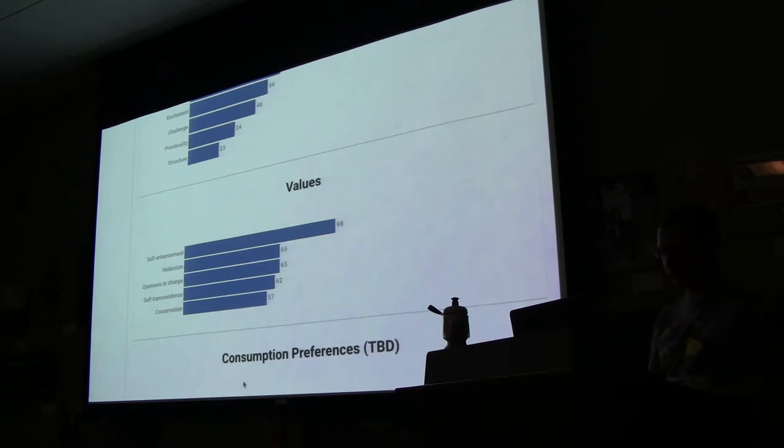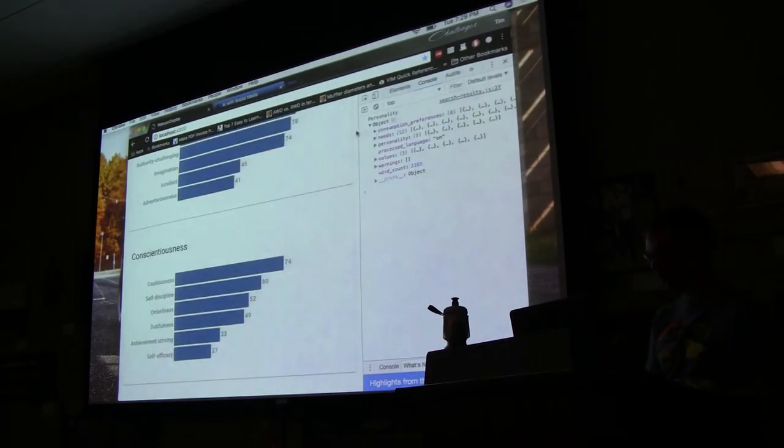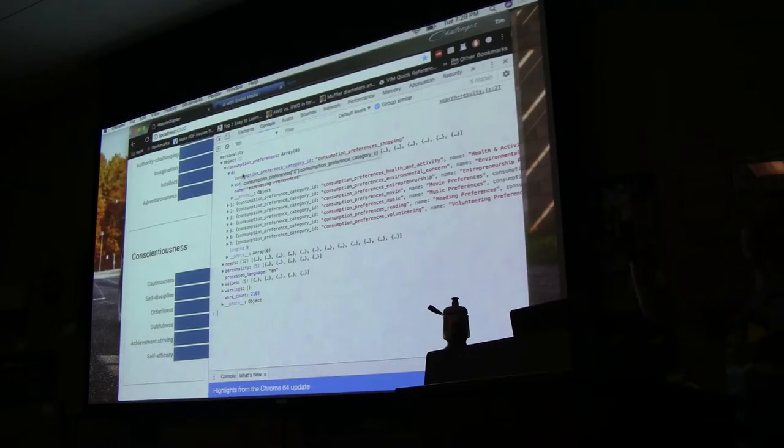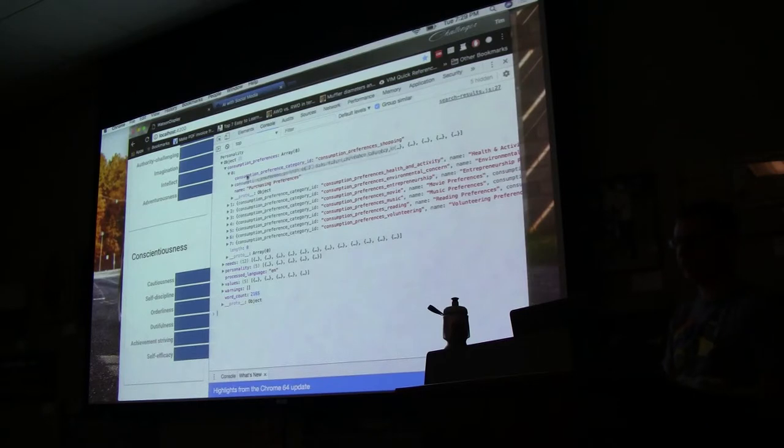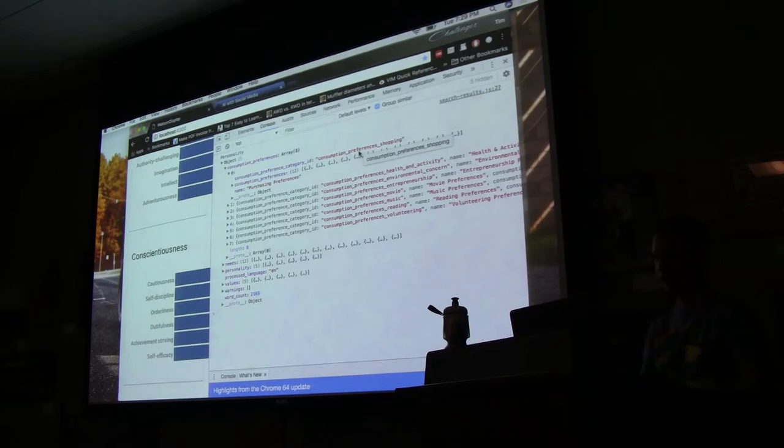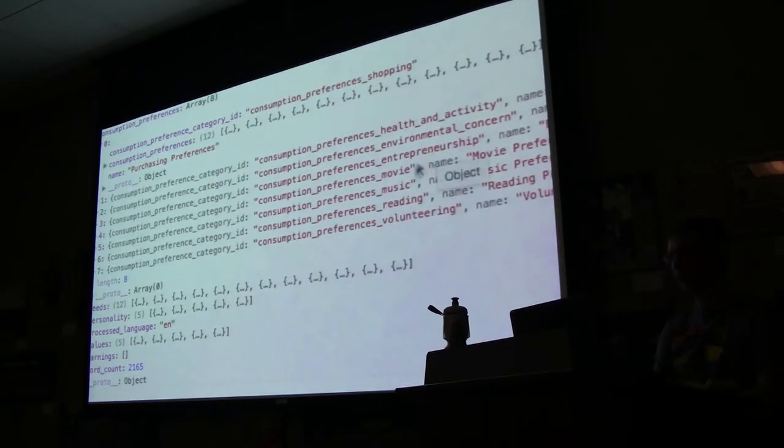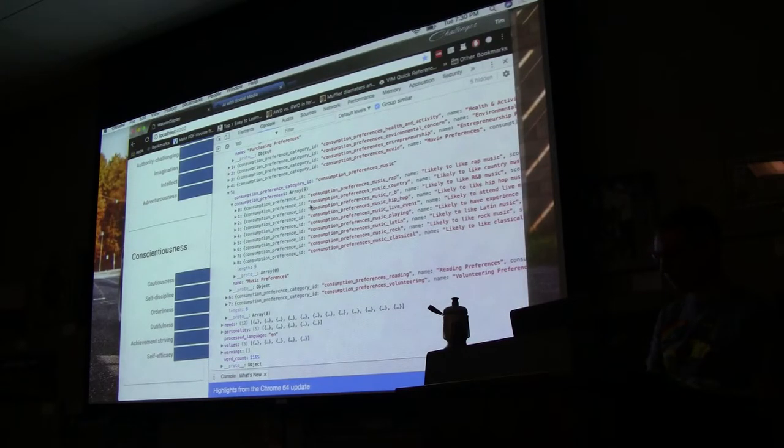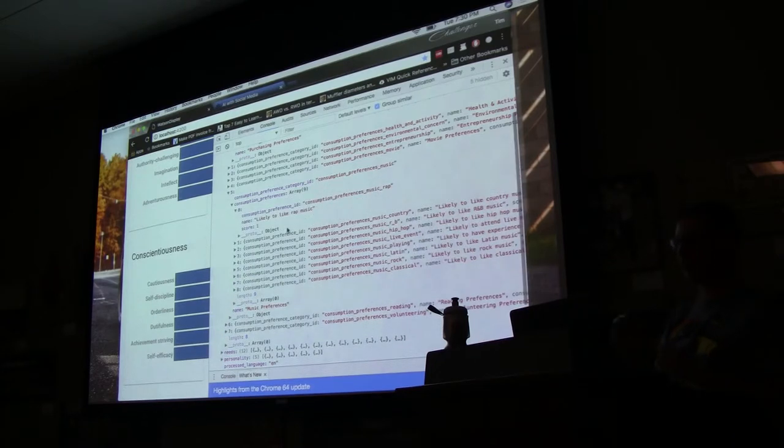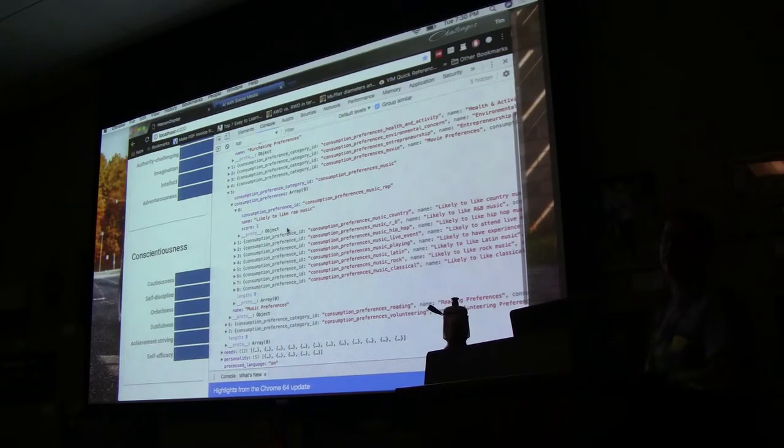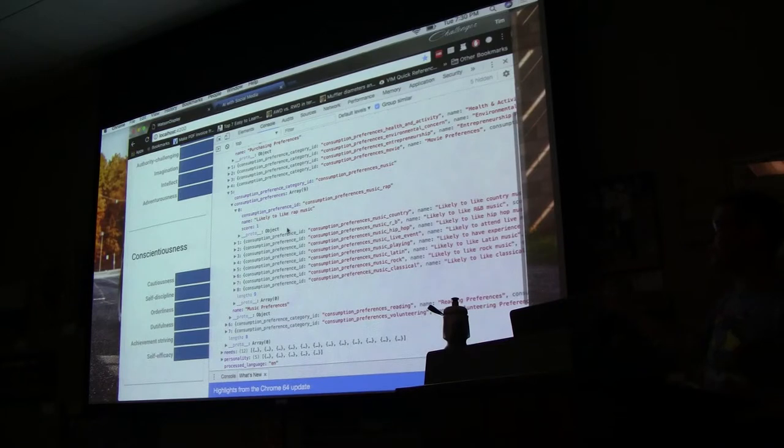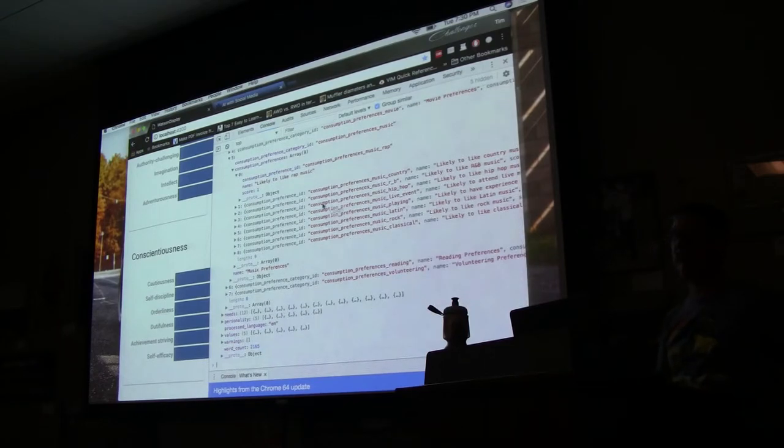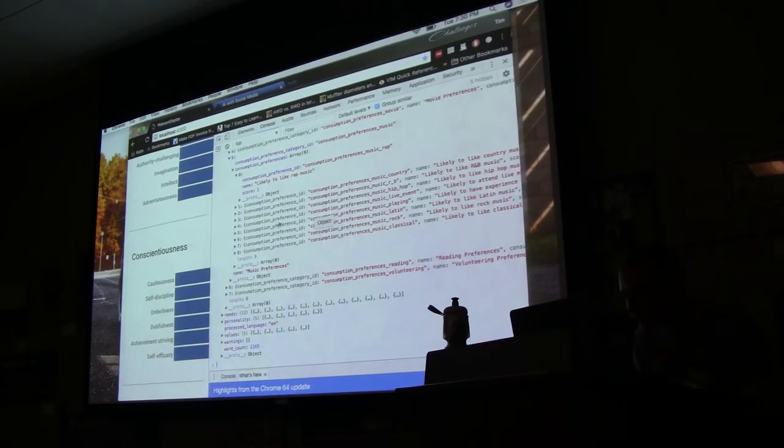These consumption preferences, they do a 0.5 or 1. It's either on-off or kind of in the middle. Look at this - shopping, health, environmental, entrepreneurship, movie, music, reading, volunteering. For example, we'll play music here. There's a rap category. Likely to like rap music, one. So sell this person rap is what it's saying. The accuracy is a different discussion, but assuming it's accurate, sell this person rap music.